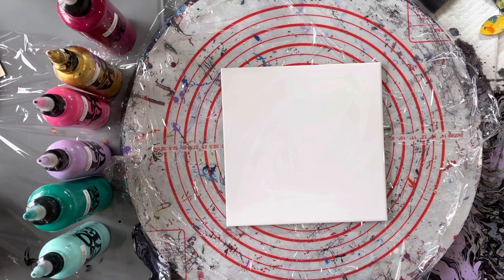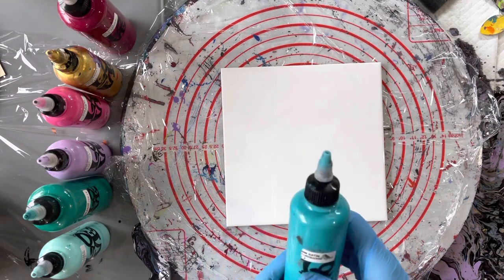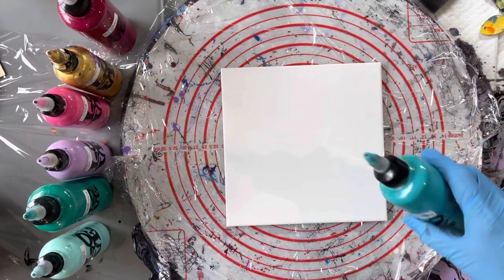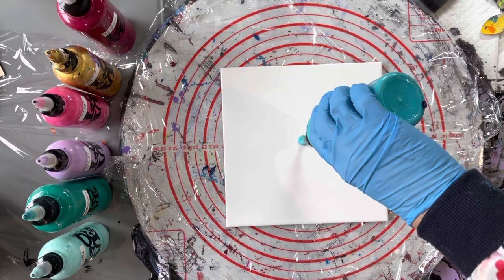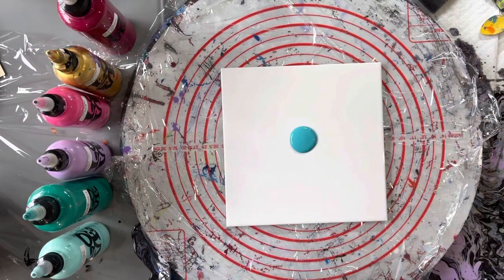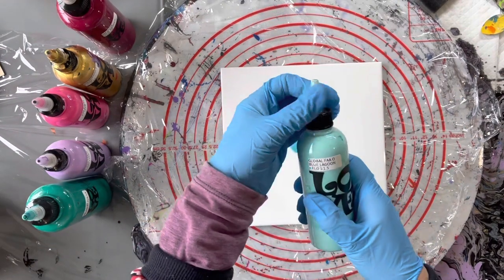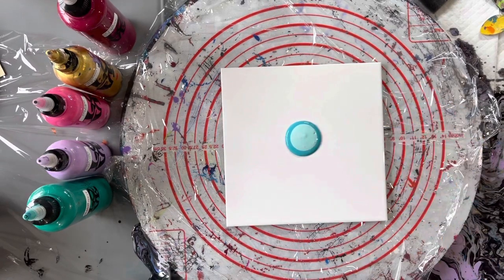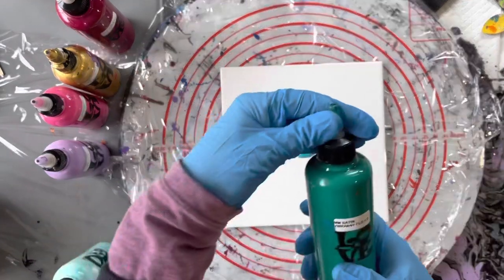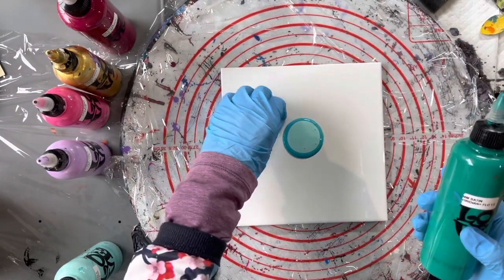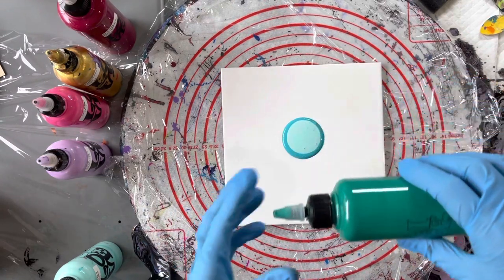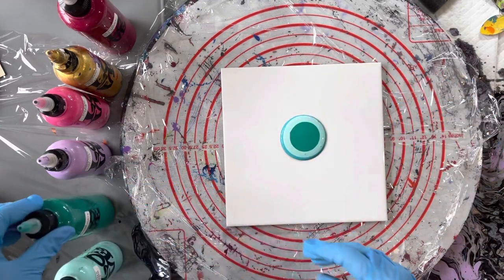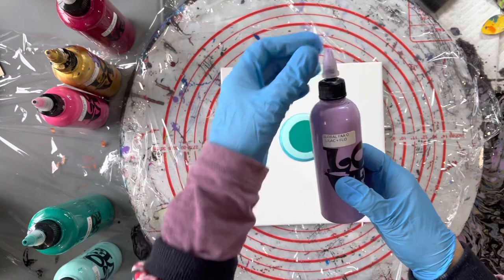So I'm going to start laying these colors down. I will put all the colors in the description box below. This first color is the Montmartre Satin Viridian. They're all mixed with Australian Floetrol, so I'm just going to put a little circle in the middle there. The next color is the Global Blue Lagoon. I'm just randomly placing these colors down. This is the Montmartre Satin Viridian.